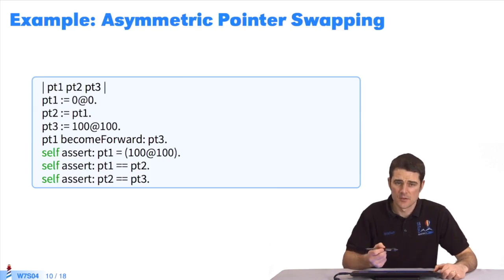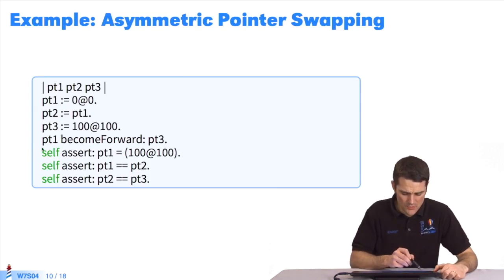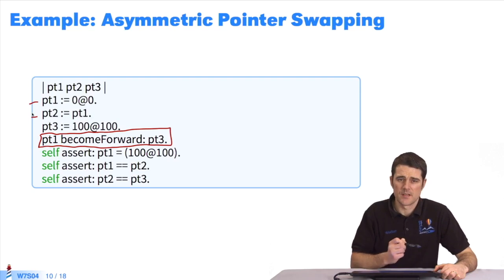Here's another example using points. When we execute a become forward, we see that it impacts on point 1 and point 2. Point 3 was not affected by the become forward, and those that pointed to this object are unchanged.